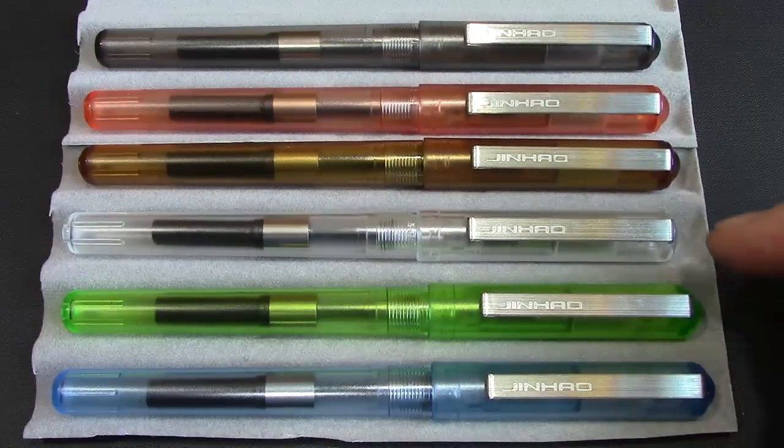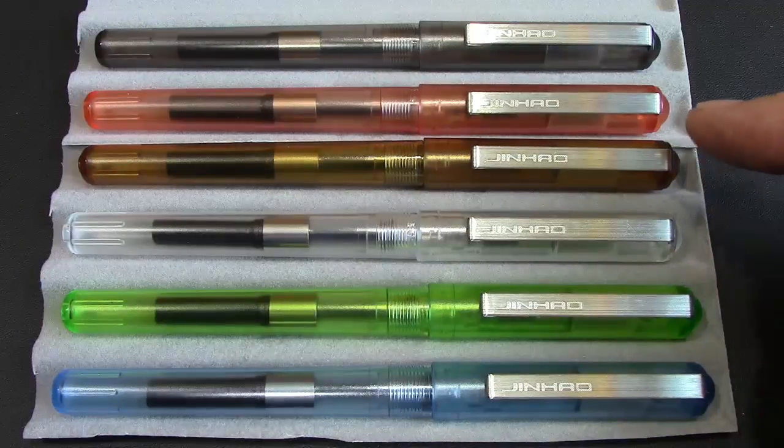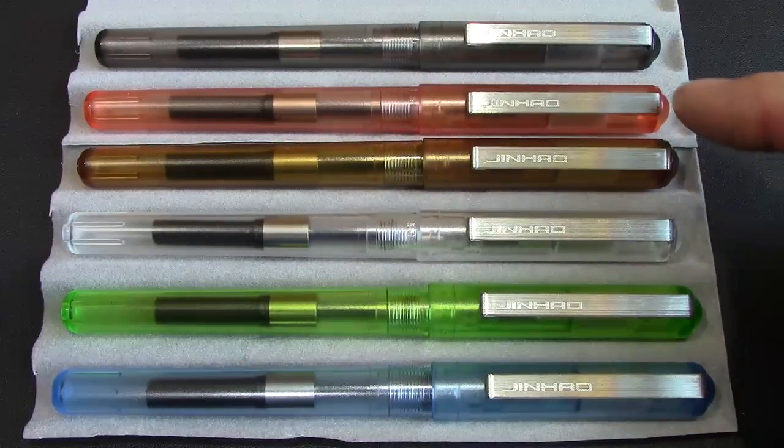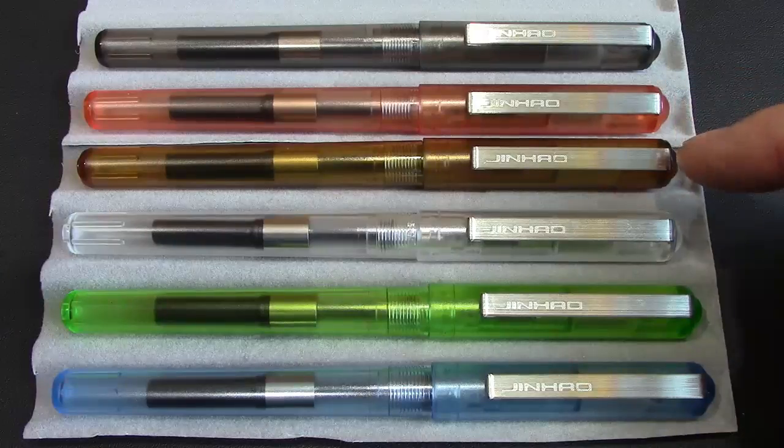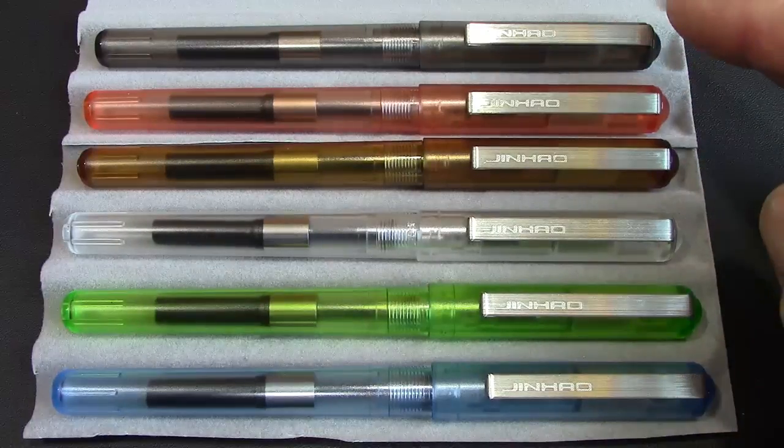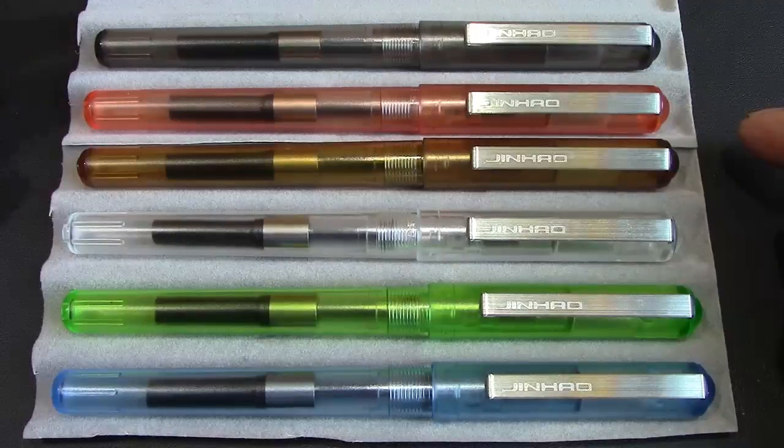Blue, green, clear, kind of orange, kind of reddish orange, maybe brownish orange, and a charcoal gray. Very similar to the six colors that are in the 992.